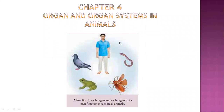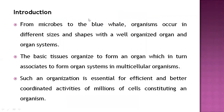In our third chapter, we discussed tissues. Tissues are classified in different forms and we covered the different types of tissues. At the organ level, tissues are present, and we discussed that in the last chapter. Now we will see this fourth chapter.